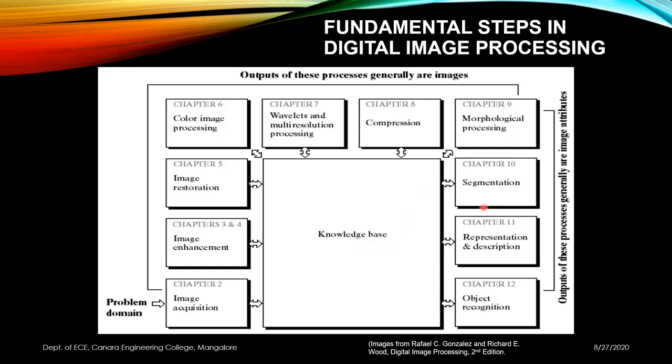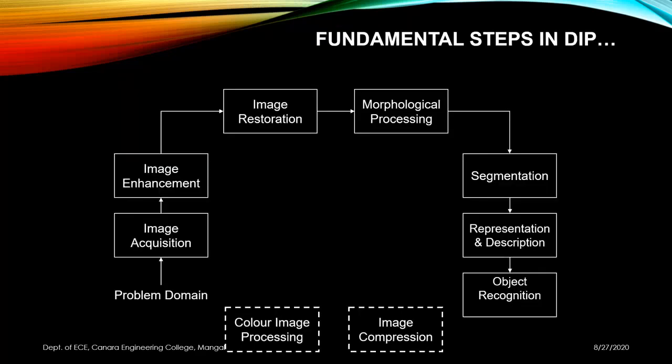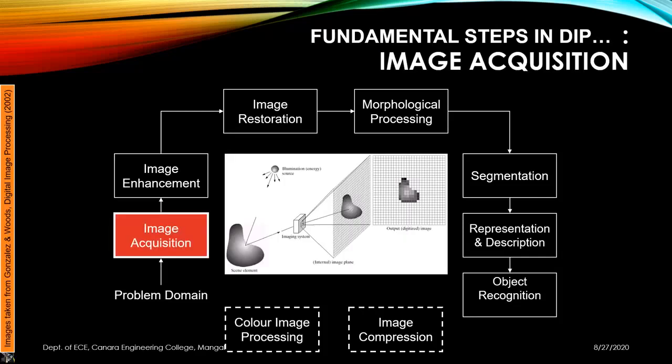In the first step, image acquisition, we are capturing the scene element using the imaging system. We have an analog image captured and we perform analog-to-digital conversion to get a digital representation. This is image acquisition; we'll have a detailed discussion about image acquisition techniques later.